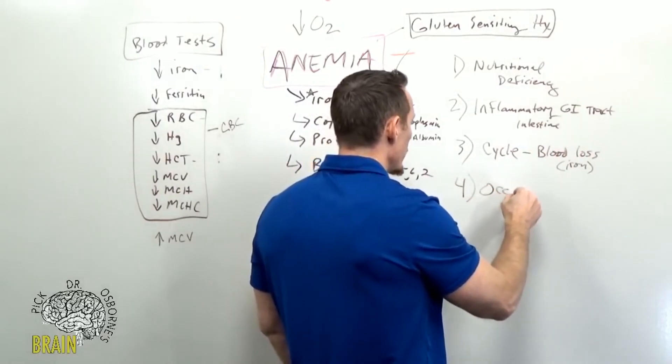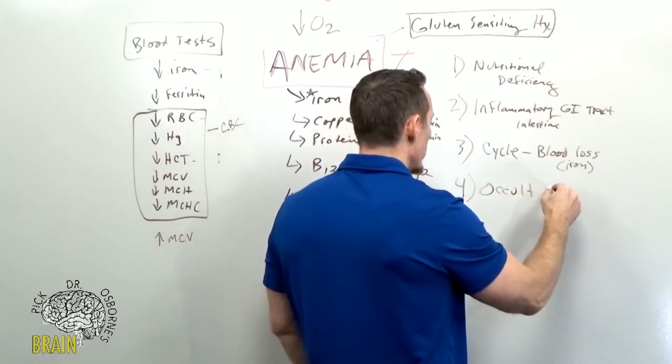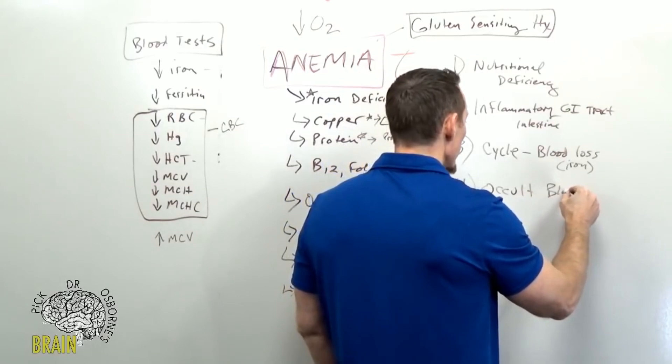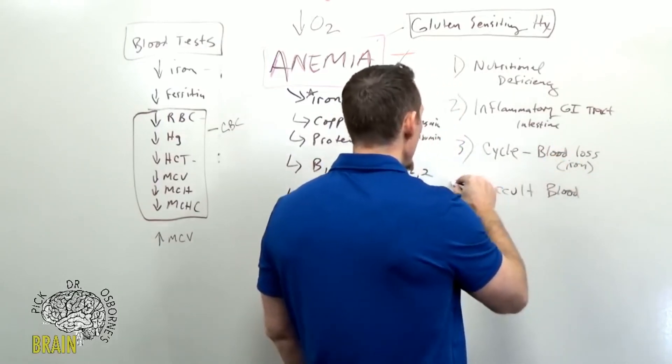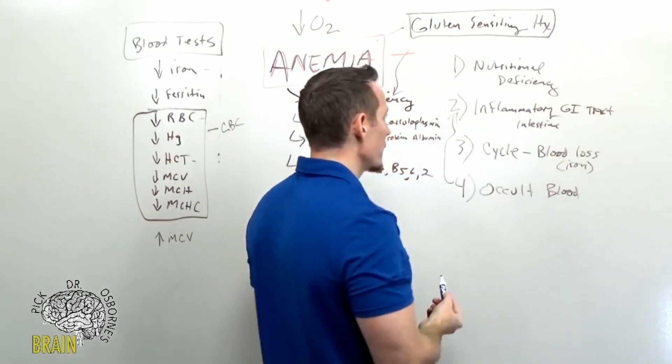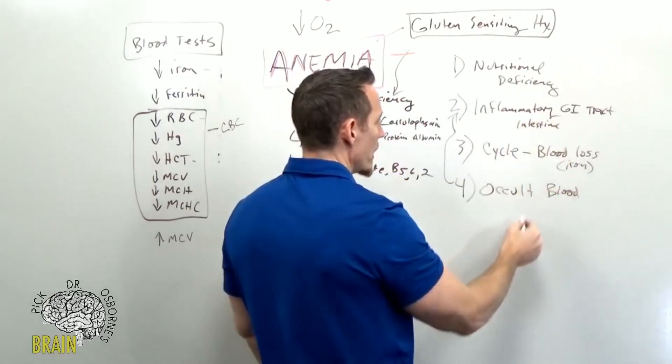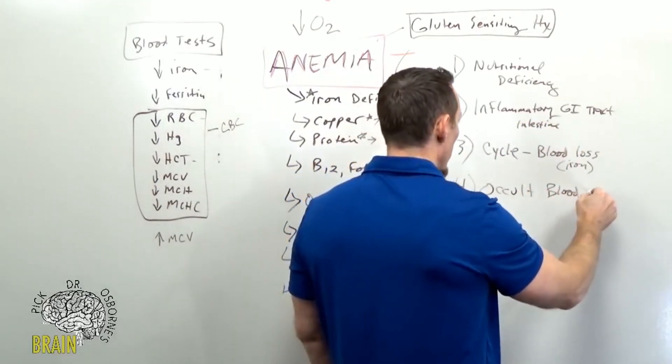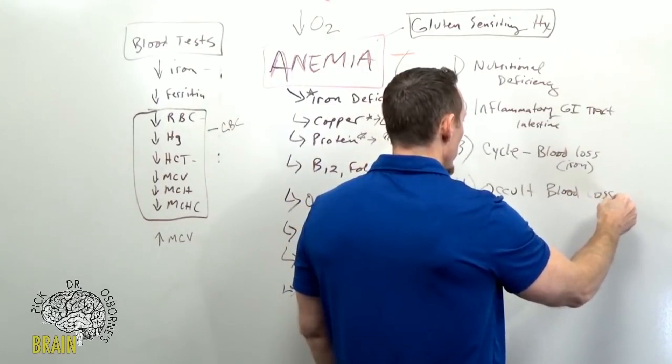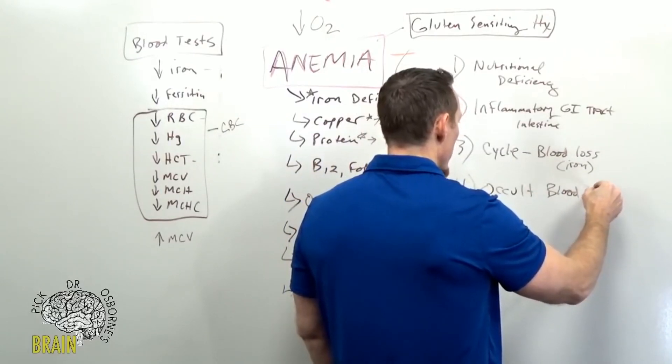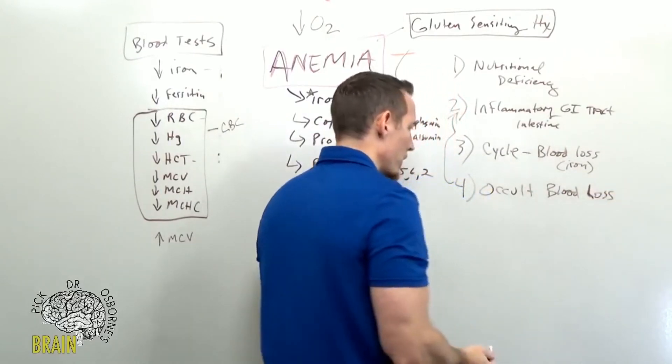Additionally, we can see, aside from known blood loss, we can see a problem with occult blood loss. This is a really common problem and again usually where this is, where we see this, is in inflammatory GI problems. But occult blood loss, what does that mean? That means you don't see it coming out.